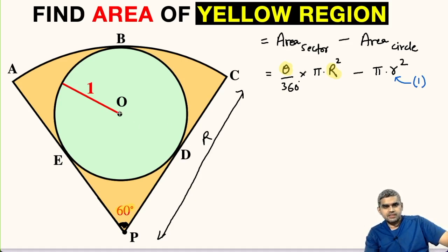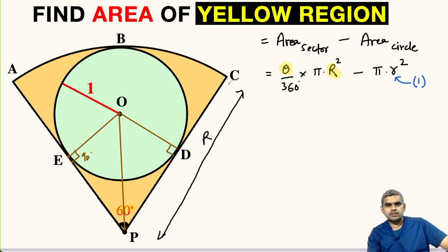Let us do some modifications here. We will join O and D, similarly we will join O and E, and finally we will join O and P. Since OE is the radius of the circle and AP is tangent to it, if we join these two points, this will be 90 degrees. Likewise, OD will be perpendicular to this tangent PC. This will be 1 unit and this will be also 1 unit.